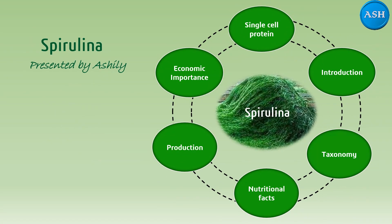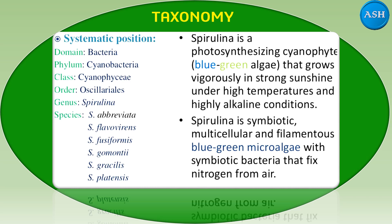The next topic is taxonomy. Let us classify Spirulina into its systematic position. It comes under the domain Bacteria, phylum Cyanobacteria, class Cyanophycia, order Oscillariales, and genus Spirulina. Different species include Spirulina abbreviata, Spirulina flavovirens, Spirulina fusiformis, Spirulina gomontii, Spirulina gracilis, and Spirulina platensis. These are the different species arranged in systematic classification.